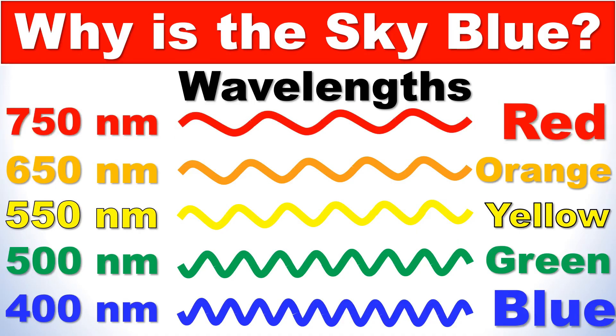You can't see those waves because they're so tiny, but you can visualize them. This is red. As you can see, it is the widest wavelength of color that we can see, but it is still very short — about 750 nanometers.